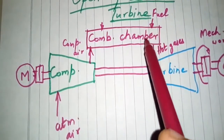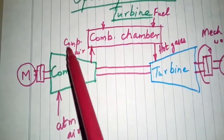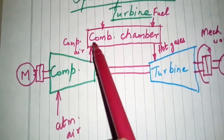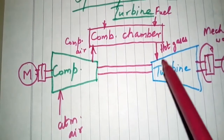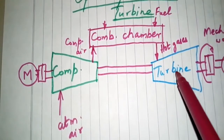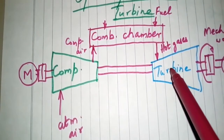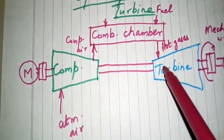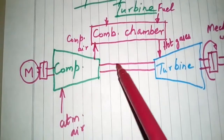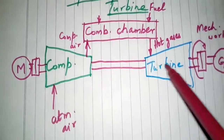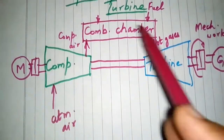The compressed air goes to the combustion chamber where fuel is supplied and ignited with the oxygen in the compressed air. The hot gases carry kinetic energy and strike the turbine rotor blades, causing rotation and producing work. Part of the work drives the compressor and the remainder generates electric power in the generator.